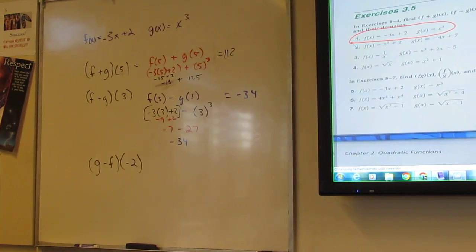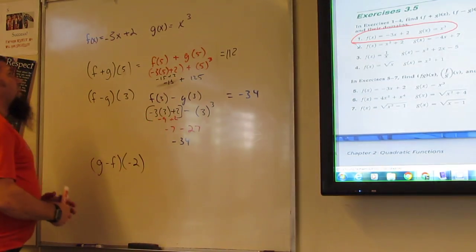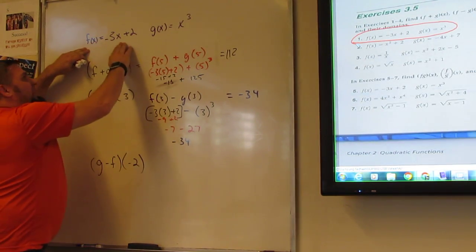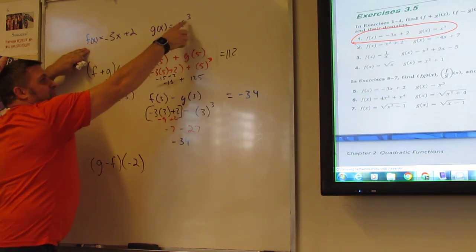Okay, on this first one, let's walk through it one more time since I was just doing the board. Alright, if f(x) is equal to -3x + 2, and g(x) is equal to x cubed,